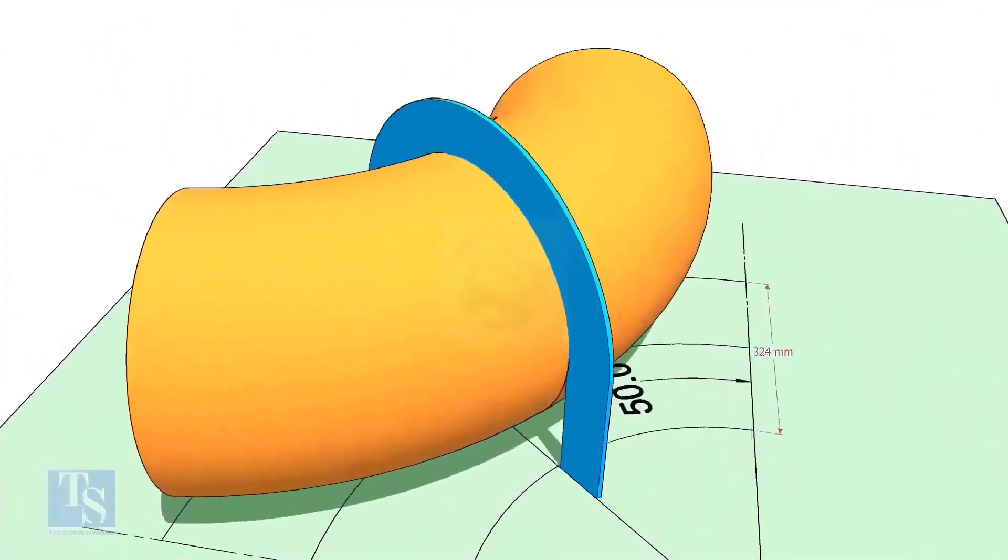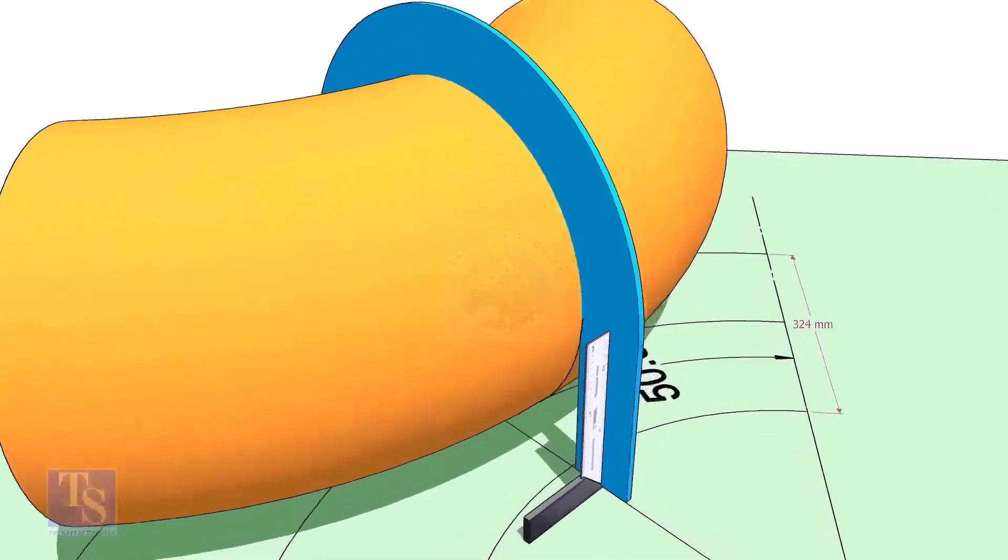Put the half circle plate on the elbow exactly on the line as shown. Make the plate right angle.